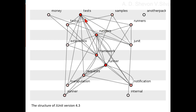Also, we note the number of cycles remains unchanged. The surge of functions has not triggered an increase in mutually dependent packages. Here, money interacts with JUnit and framework.